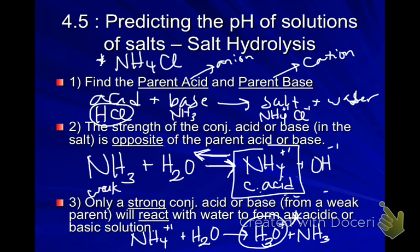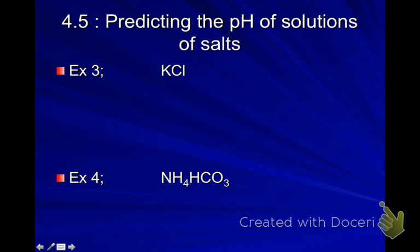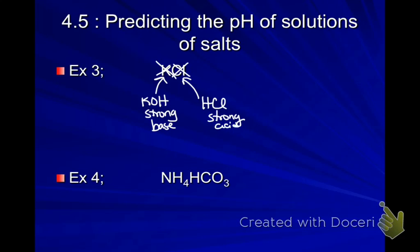So now we're going to see how this works in some other examples. KCl, remember first you want to find your parent acid and parent base. So KCl came from HCl, which was strong, so that means Cl- isn't going to do anything. And K came from KOH, which is also a strong, so that means that K+ does nothing as an acid. So if neither one of them messes with water at all, then this resulting solution is going to have a neutral pH.